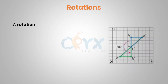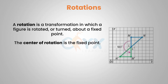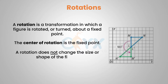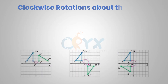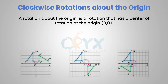A rotation is a transformation in which a figure is rotated or turned about a fixed point. The fixed point is called the center of rotation. A rotation does not change the size or shape of the figure; therefore, the image and pre-image are congruent. A rotation about the origin is a rotation that has a center of rotation at the origin (0,0).